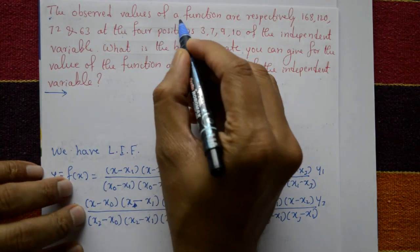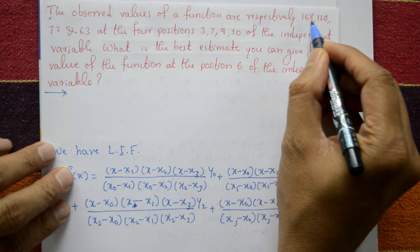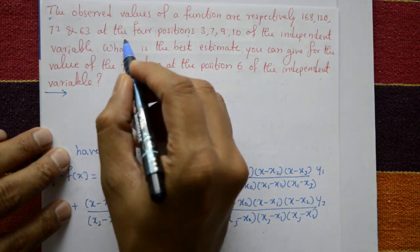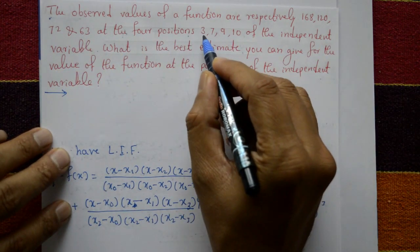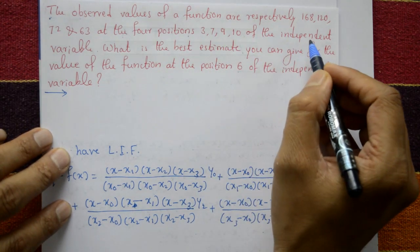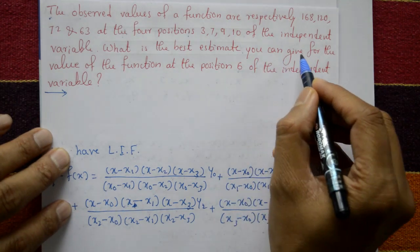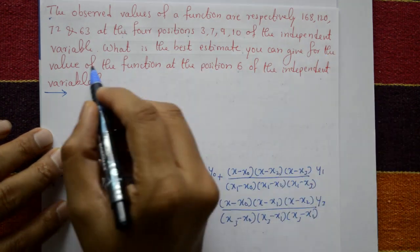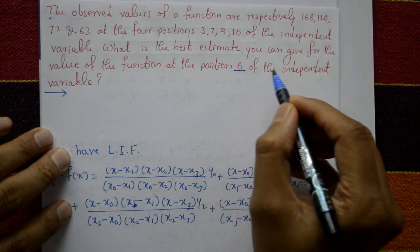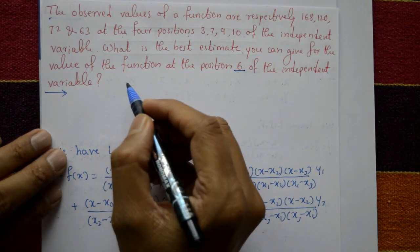The observed values of a function are respectively 168, 120, 72 and 63 at the four positions 3, 7, 9, 10 of the independent variable. What is the best estimate you can give for the value of the function at the position 6 of the independent variable?